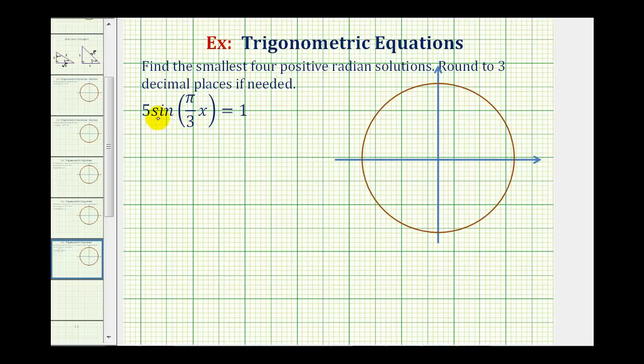This equation may look challenging because we have the sine of π/3 times x, so what we'll do here is perform a substitution. We'll let θ equal π/3 times x.